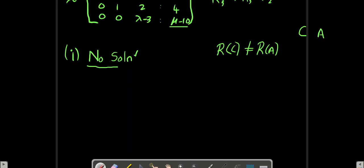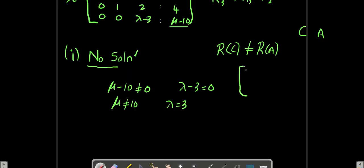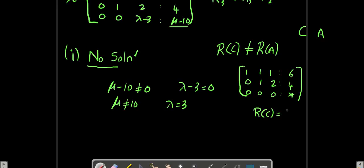What I do is put mu minus 10 not equal to 0, and take lambda minus 3 equal to 0. So lambda equals 3 and mu not equal to 10. The matrix becomes [1, 1, 1 | 6], [0, 1, 2 | 4], [0, 0, 0 | some non-zero quantity]. Rank of C equals 3 and rank of A equals 2, so the system will have no solution.